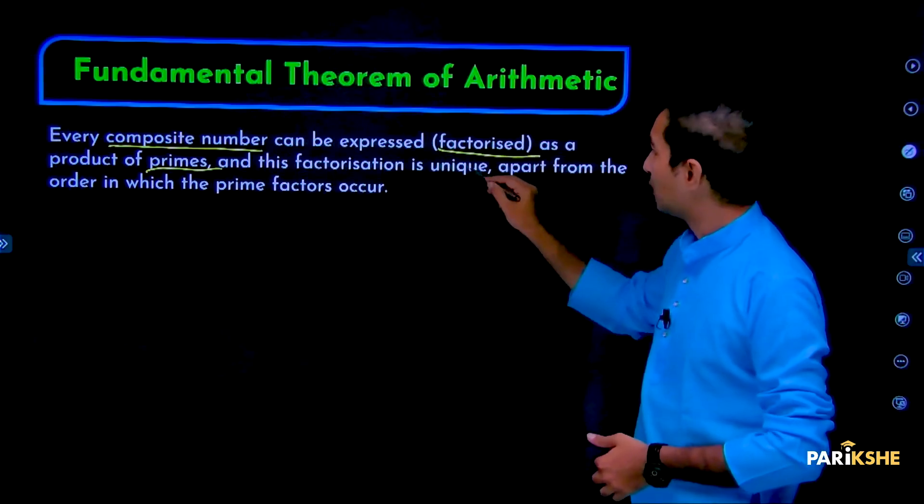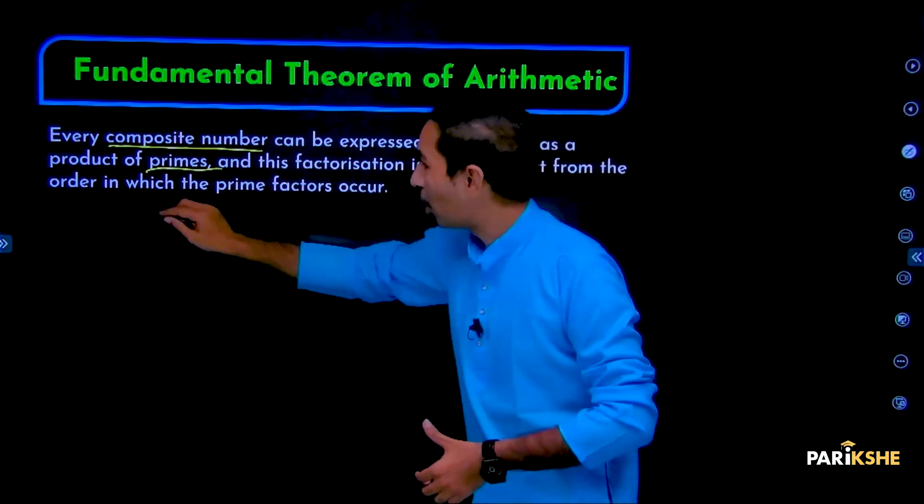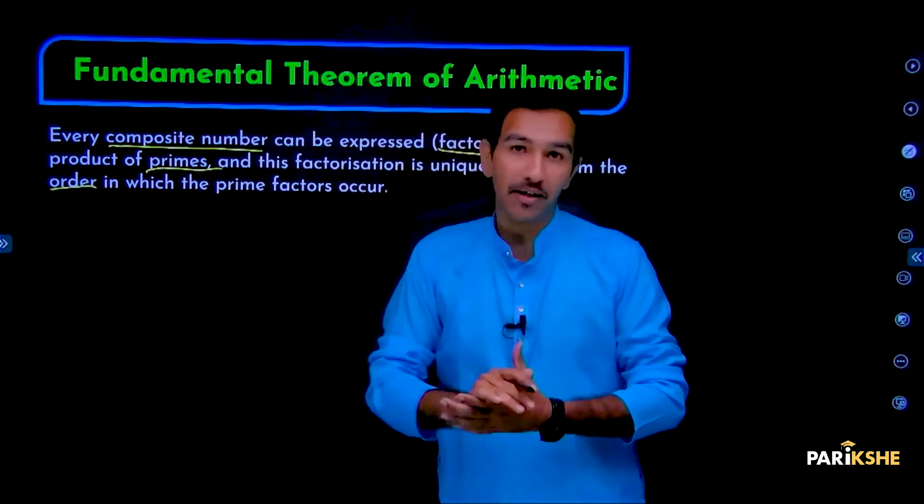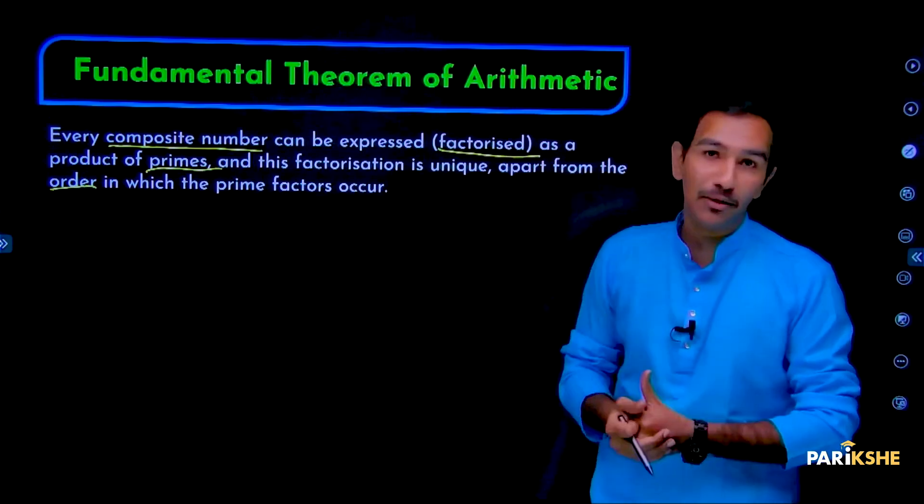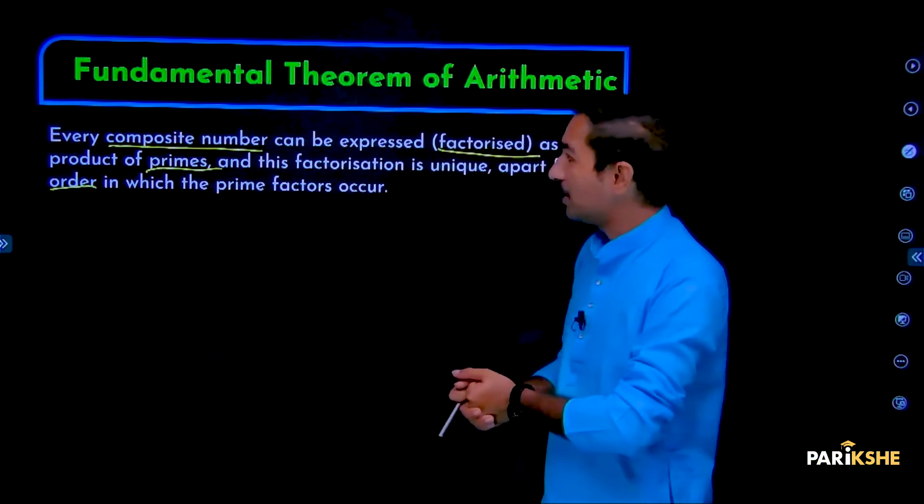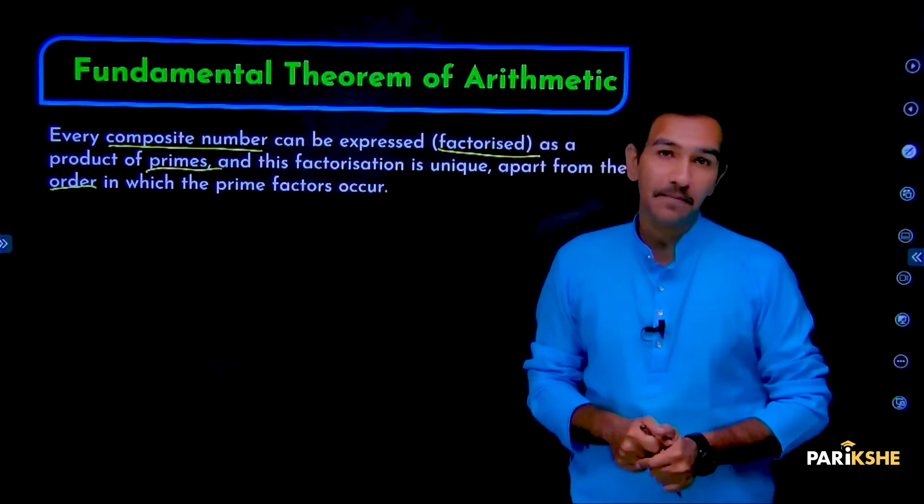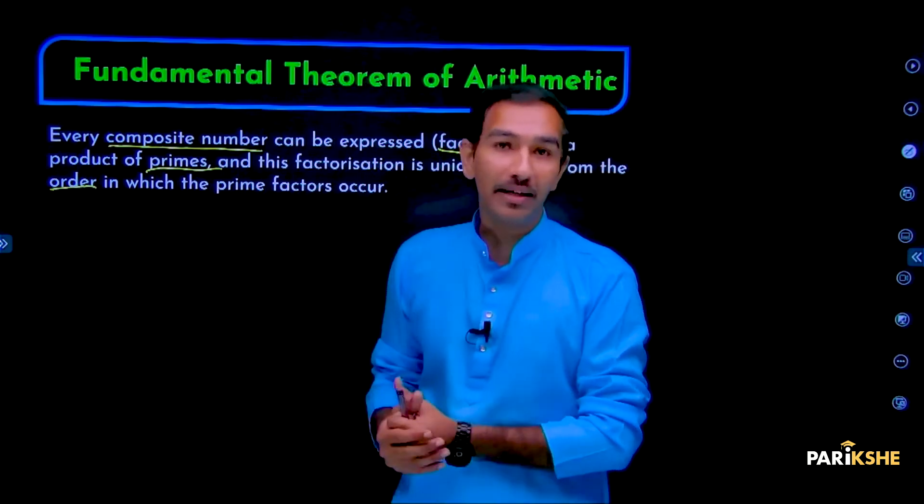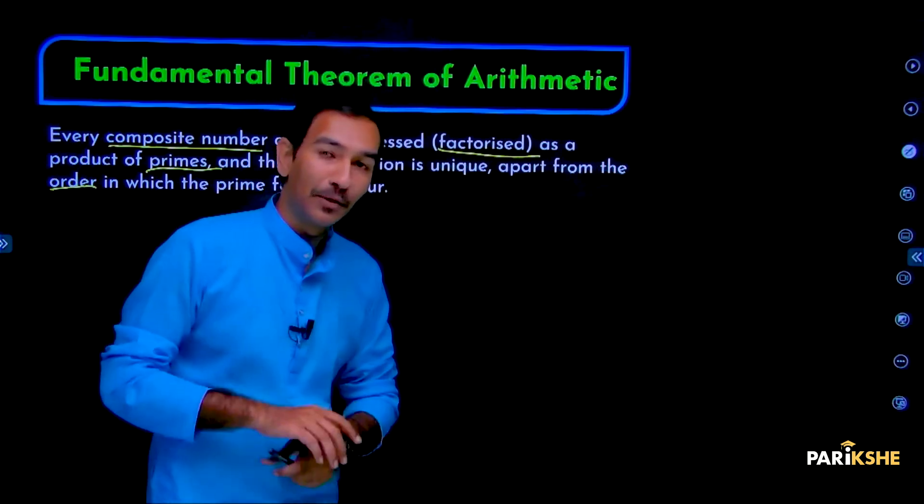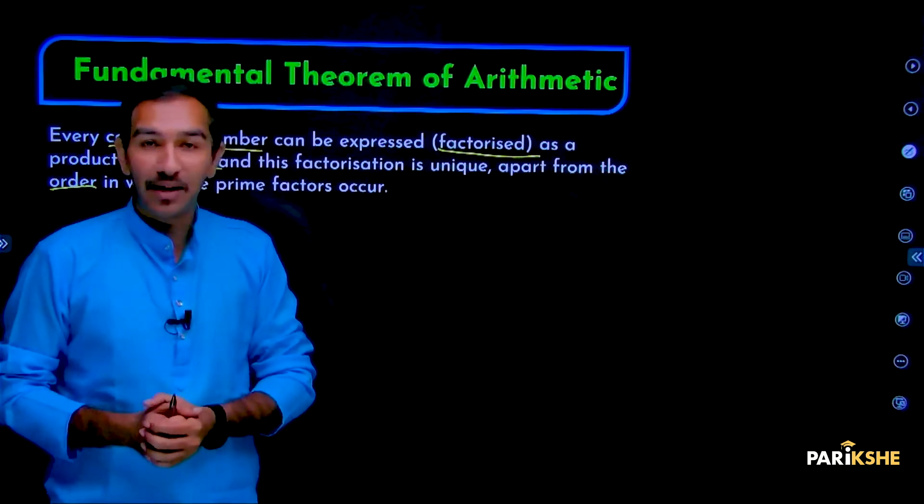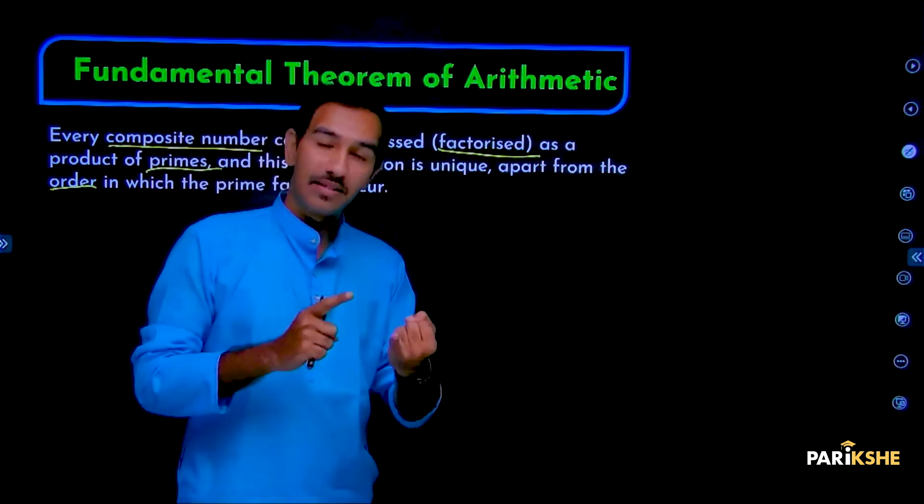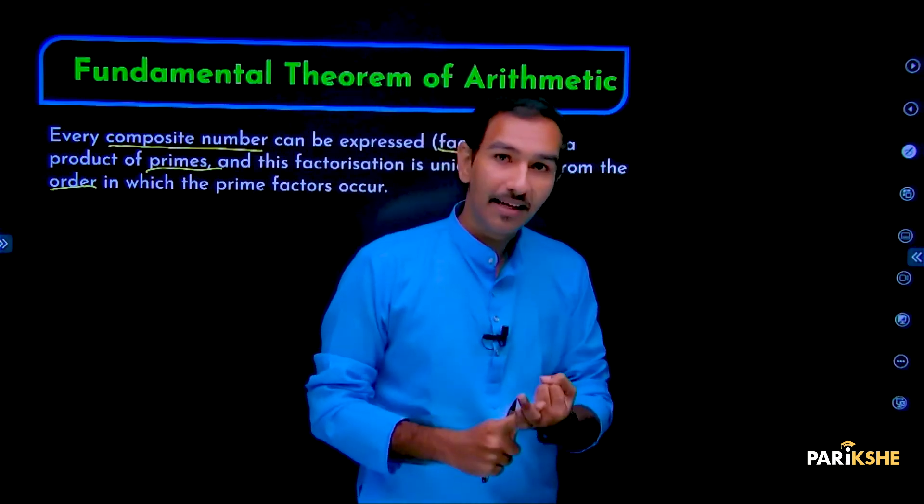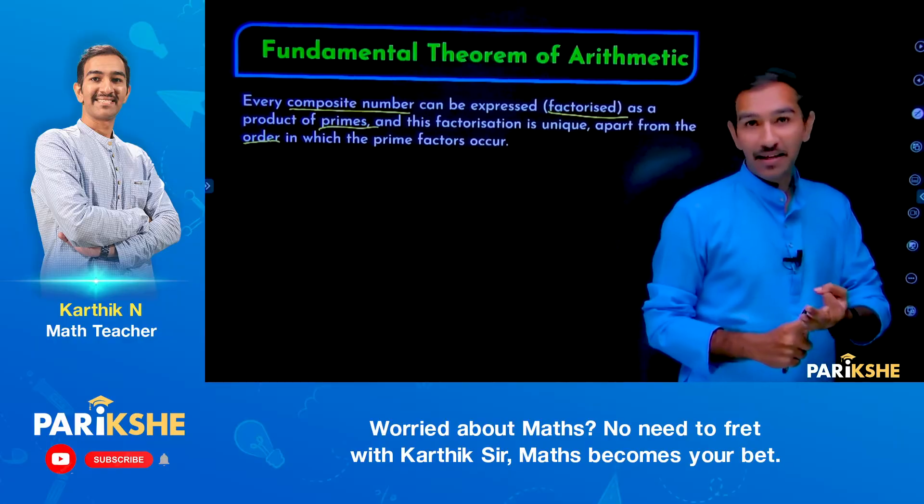What does composite number mean? Composite means something is made of multiple components. For example, concrete is a composite material. Why is concrete a composite material? Let me explain.